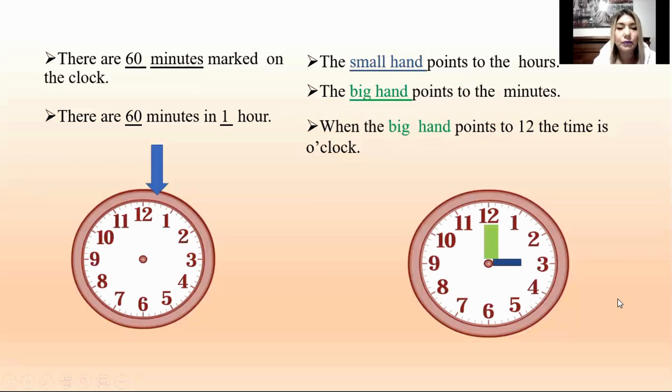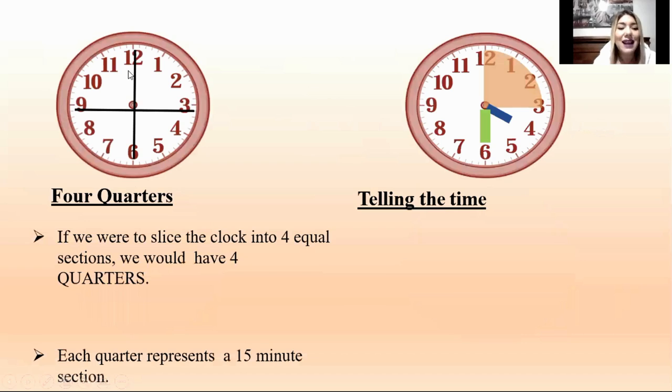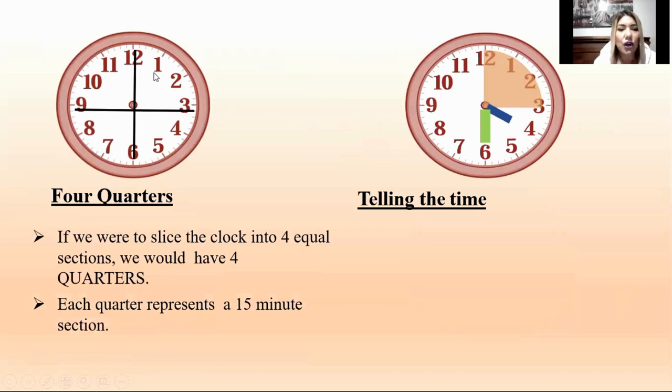Let's continue. We have two different clocks here. The first one is about four quarters. If we were to slice the clock into four equal sections, we would have four quarters. Each quarter represents a fifteen minute section. Tenemos cuatro partes en el reloj. Cada una de esas partes representa quince minutos en el reloj.